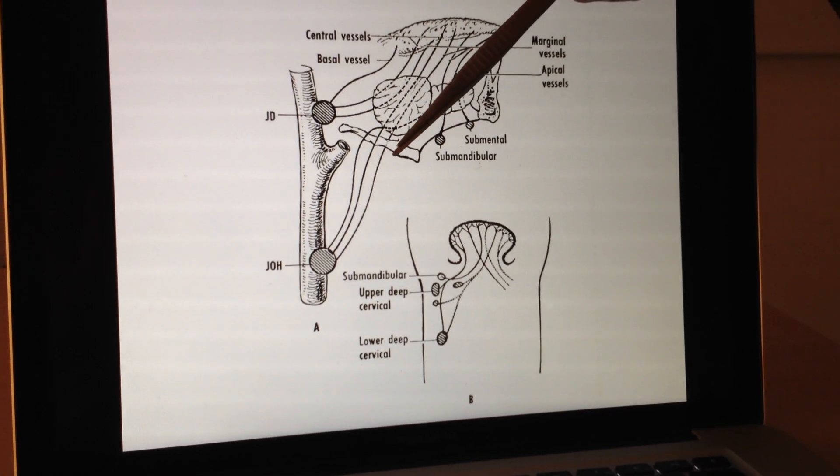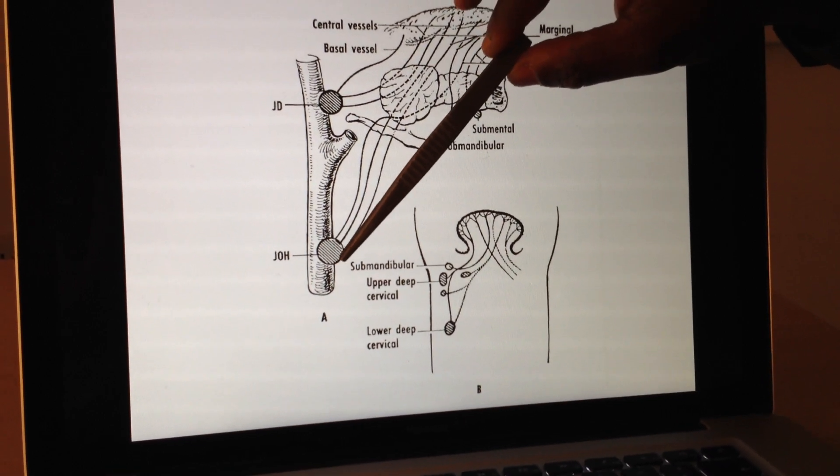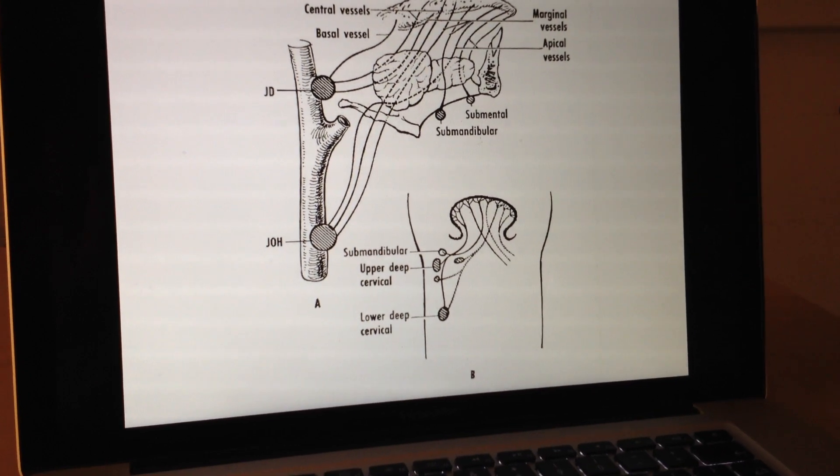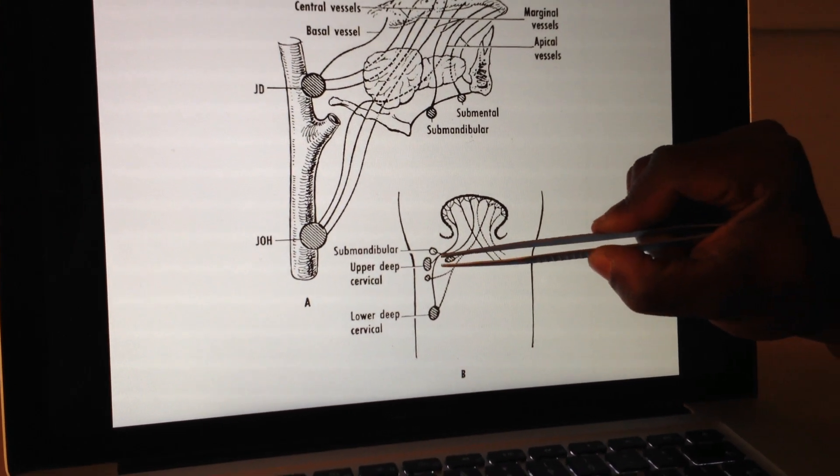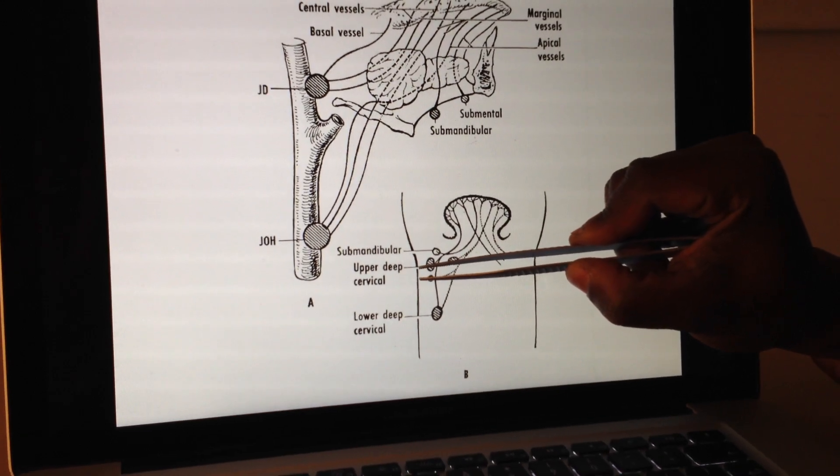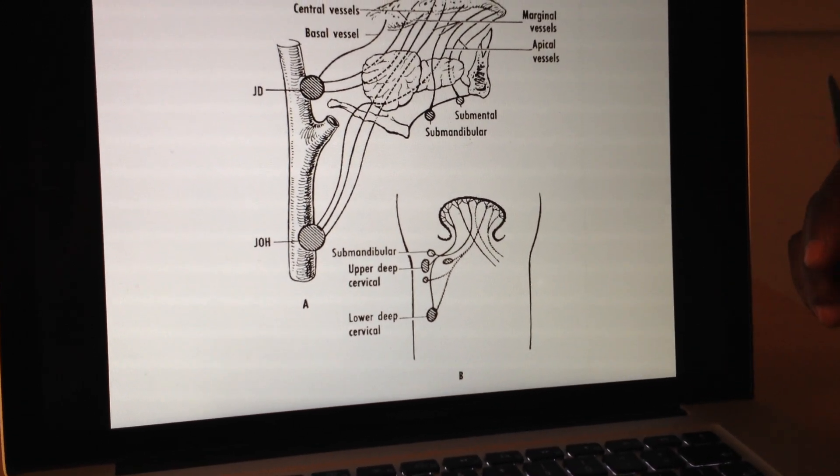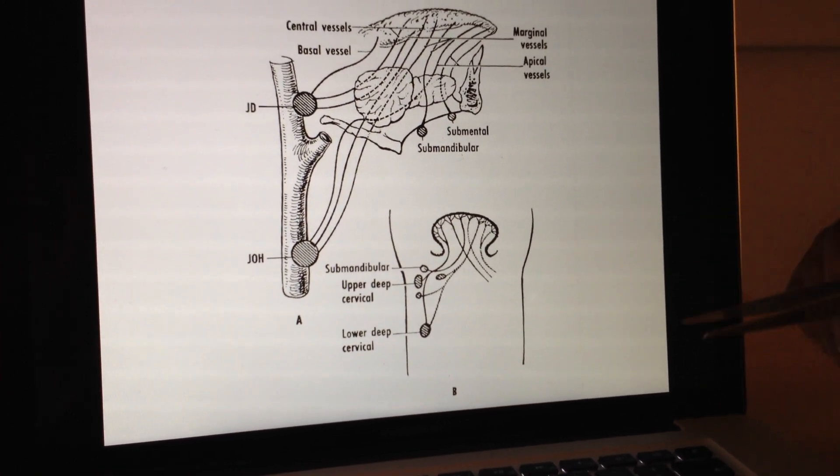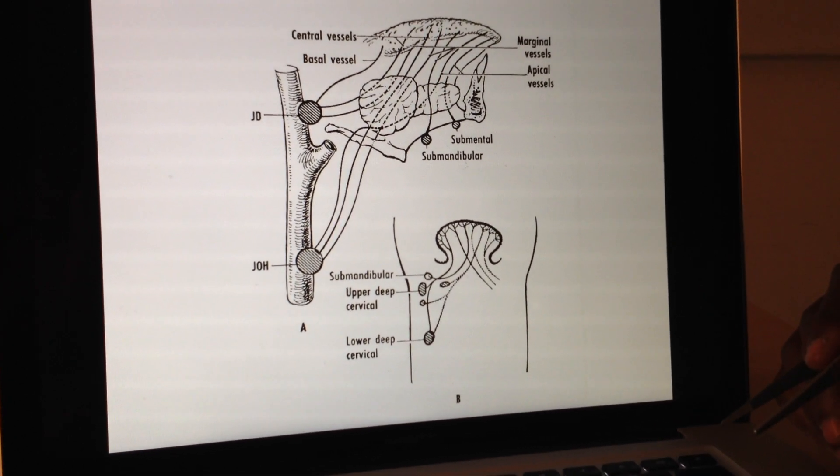And these are then communicating further down, and ultimately things will all go through that jugular omohyoid and descend down and away. So here we have the submandibular coming down to these upper deep cervical, lower deep cervical, and away things go, heading to the thorax. And as you know, the whole lymph system drains in at the subclavian veins.